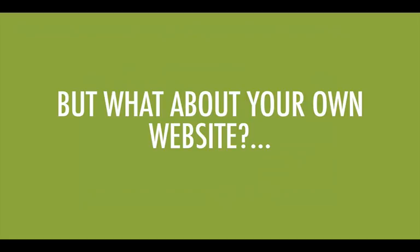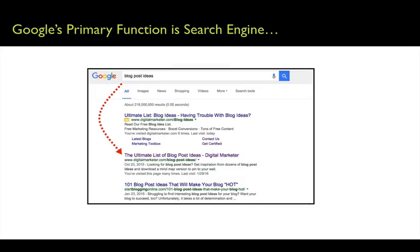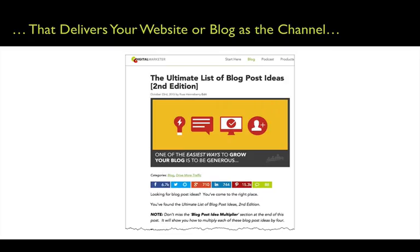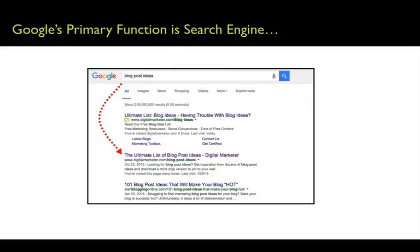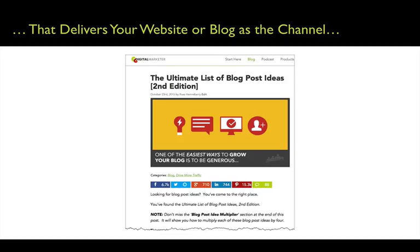Then we have to think about our own website as a channel, or our blog as a channel. What is the primary search engine we need to be thinking about for our own website? Google's primary function is as a search engine only, and that search engine delivers your website, blog, or content on your domain as the channel. So we've searched in Google and they're going to deliver that traffic to our website or blog as the channel.